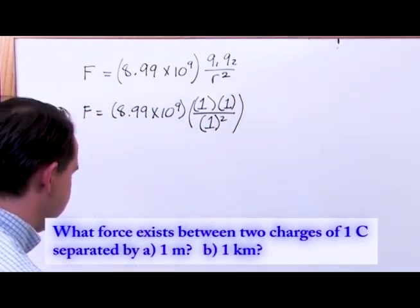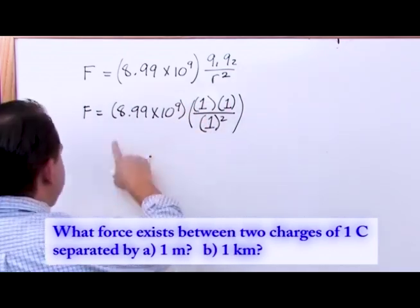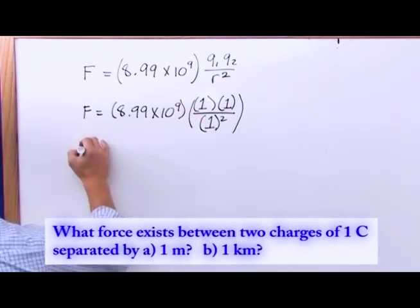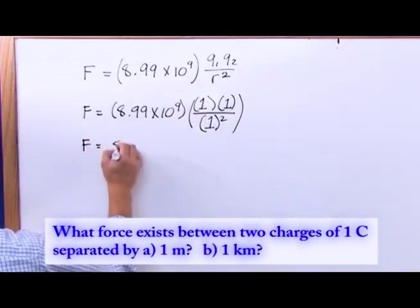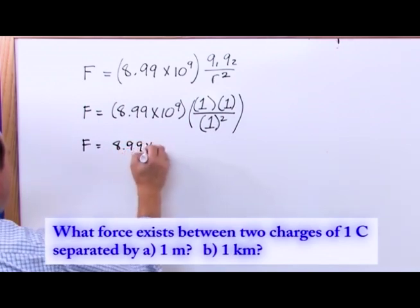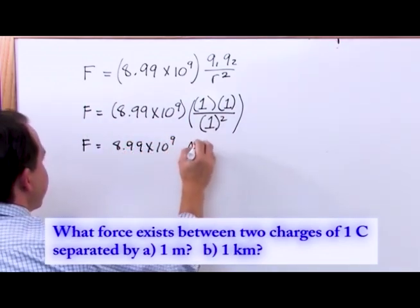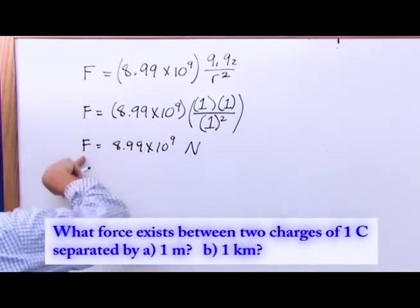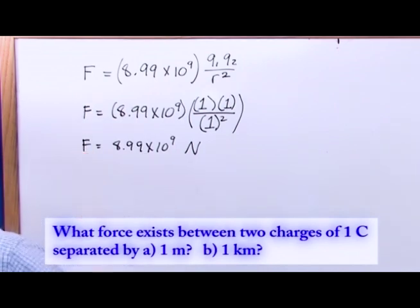So what we're going to have is 8.99 times 10 to the 9, times one coulomb times one coulomb over one squared. The answer, if they're one meter apart, is 8.99 times 10 to the 9 newtons, because the answer you're going to get is in newtons — it's a force.